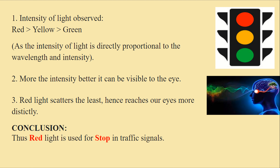Conclusion: Intensity of light was observed. Red was most, yellow was second most, and green was the least. The more the intensity, the better it can be visible to the eye. Red light scatters the least; hence it reaches our eyes more directly. So we can conclude that red light is used for stop in traffic signals.